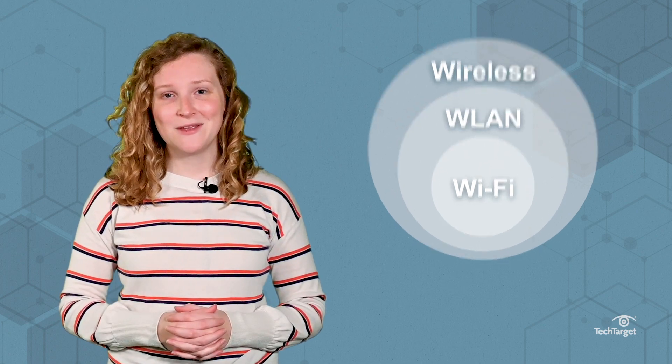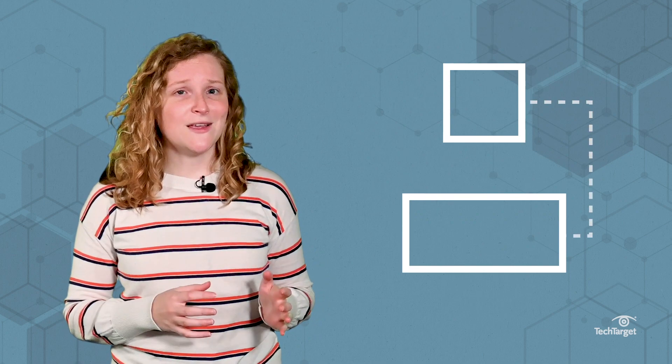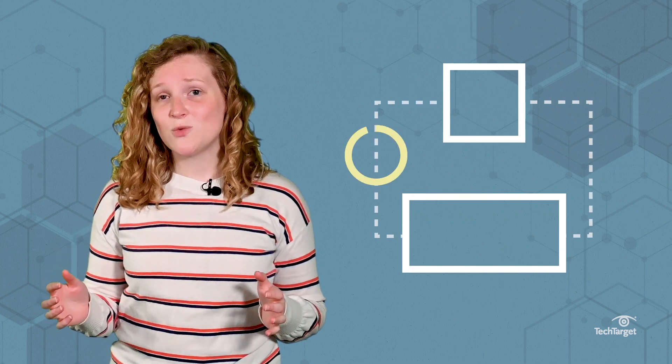Put simply, Wi-Fi is one type of wireless LAN, which is just one type of wireless network. Just like how all squares are rectangles, but not all rectangles are squares, all Wi-Fi networks are wireless LANs, but wireless LANs can use other wireless protocols.